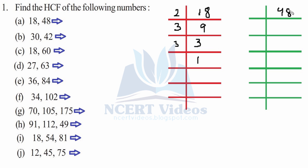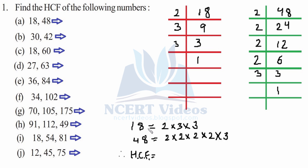Similarly, we will do for 48: two twos are four, two fours are eight, two twelves are twenty-four, two sixes are twelve, two threes are six, and three ones are three. So this is the prime factorization. Now we will write the factors: 18 is 2×3×3 and 48 is 2×2×2×2×3.